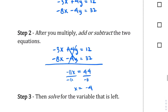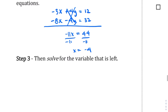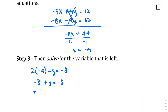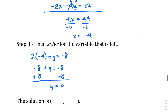And then we're going to solve for the variable that is left. So I'm going to plug in negative 4 into the bottom equation. So instead of x here, I'm going to put negative 4 plus y equals negative 8. So this is going to be negative 8 plus y equals negative 8. I'm going to add 8 to both sides, and y in this case is going to be 0. Negative 8 plus 8 is 0. So my solution is negative 4, 0.